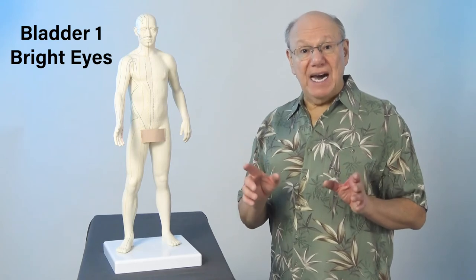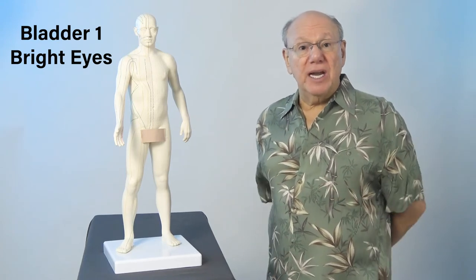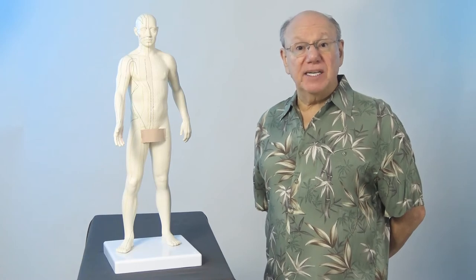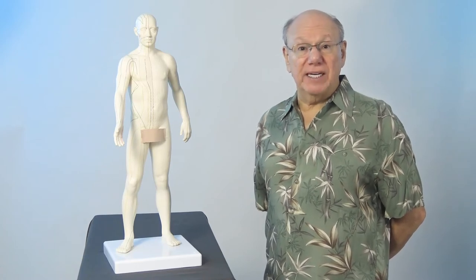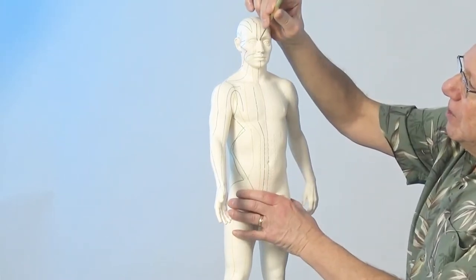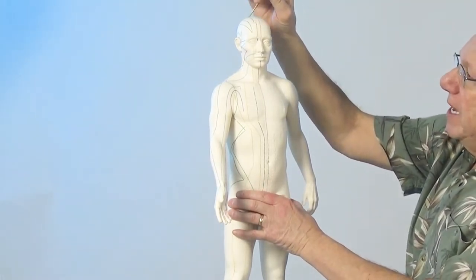Bladder 1 is known as bright eyes. Bladder 1 is located on the bladder meridian. The bladder meridian has 67 points and is the longest meridian in the body. The bladder meridian starts near the inside of your eye, then goes up over the head,